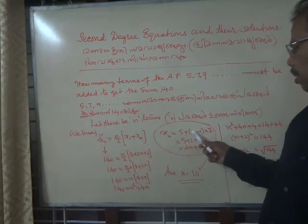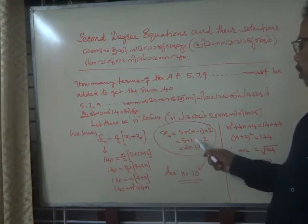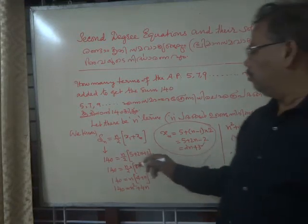That is 5 plus n minus 1 into 2. That is 5 plus 2n minus 2. That is 2n, 5 minus 2 is 3. 2n plus 3 is the nth term. First term is 5.